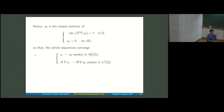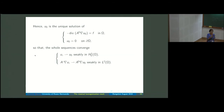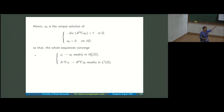This is a classical argument in homogenization: you never prove directly that the sequence converges. You use compactness, extract a subsequence, and identify the limit uniquely. If the limit is unique, then any subsequence goes to the same point, so the whole sequence converges. This argument breaks down for non-linear problems where uniqueness of the limit is not guaranteed.